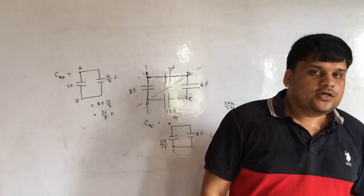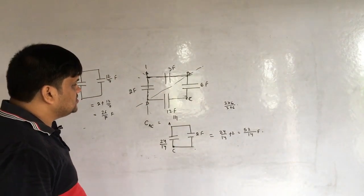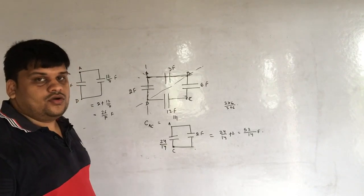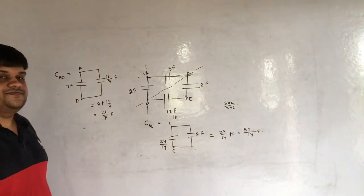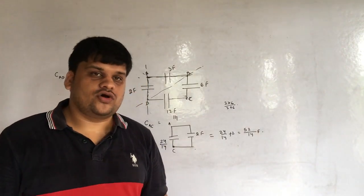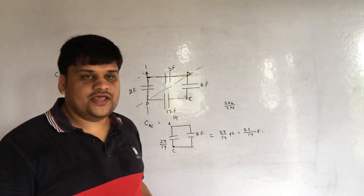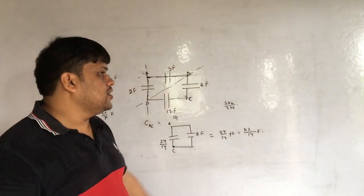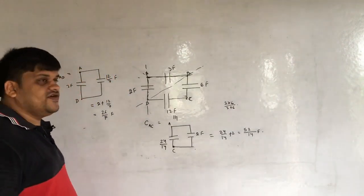It is very important to understand between which two points the capacitance is asked. Students sometimes solve for the wrong pair and get incorrect answers. These two points — series/parallel identification and between-which-points identification — are the two key things to remember. If you have not seen the last class question, go check it and then come back for more series-parallel capacitor solutions.